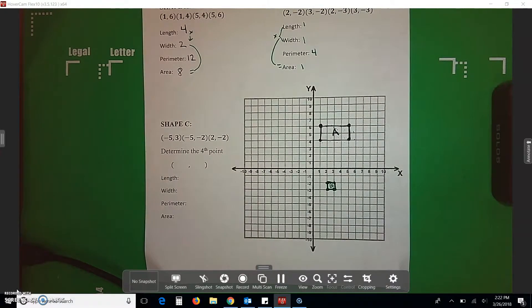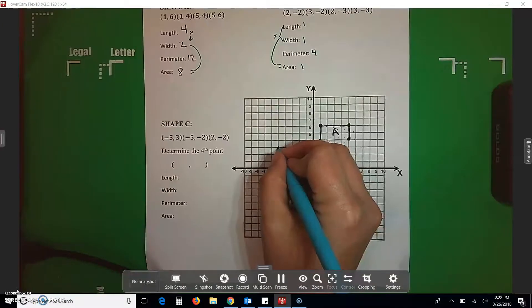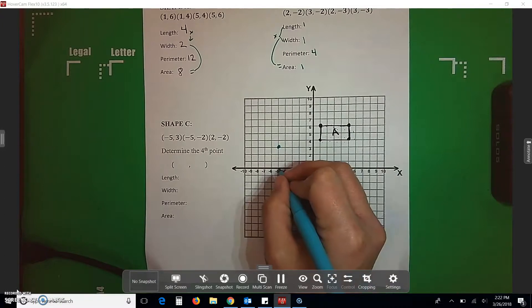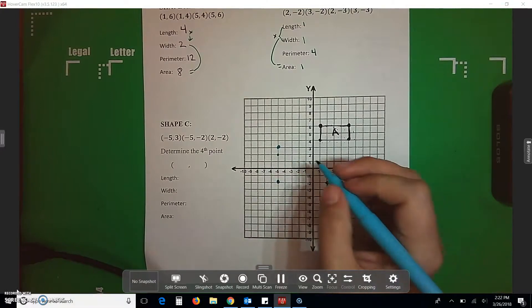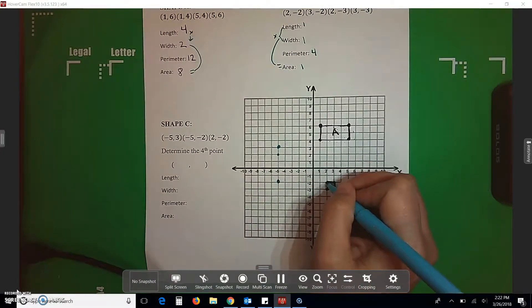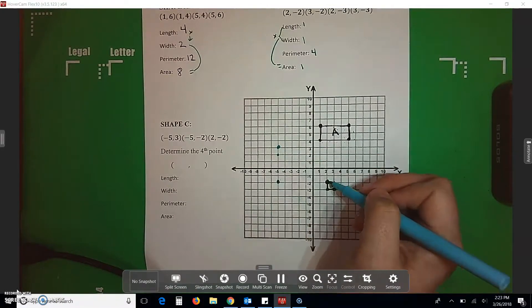For shape C, negative 5, positive 3. Negative 5, negative, oops, sorry. Negative 2 is down here. Positive 2, negative 2. It shares a corner with B. So, right now, I've got three dots.